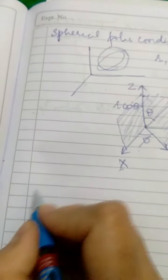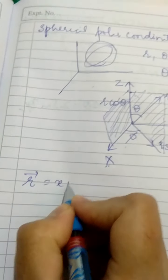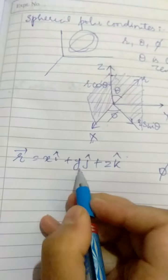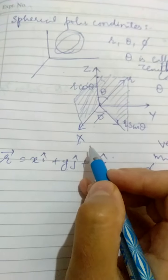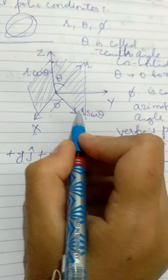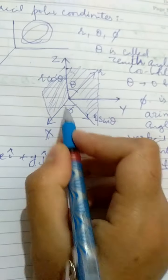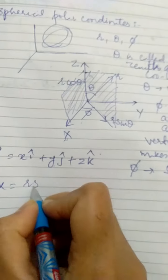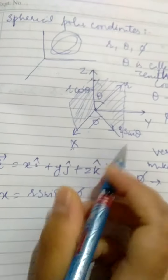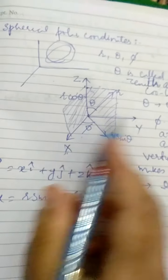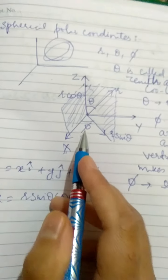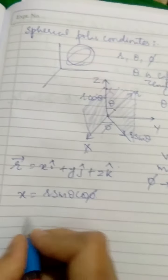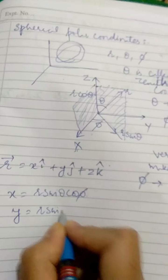The position vector r is given by xi + yj + zk. Let us find x, y, and z in terms of spherical coordinates. The component of r sin theta along x, since it makes an angle phi with the x-axis, gives x = r sin theta cos phi. The component along y gives y = r sin theta sin phi.